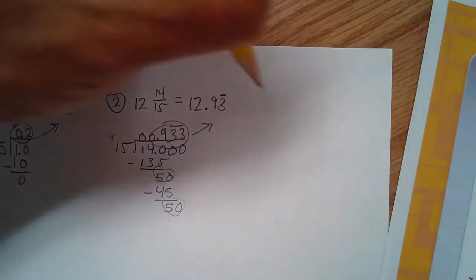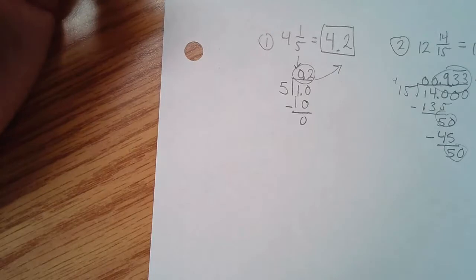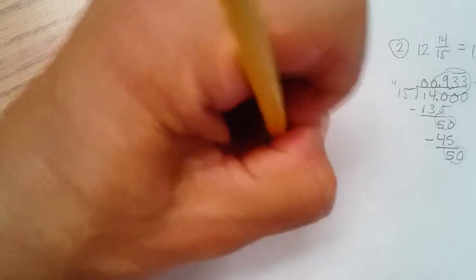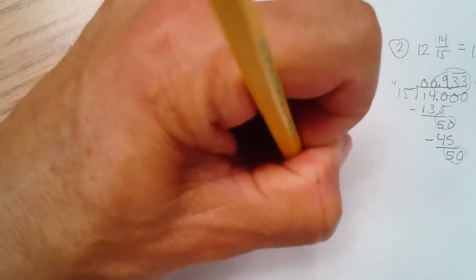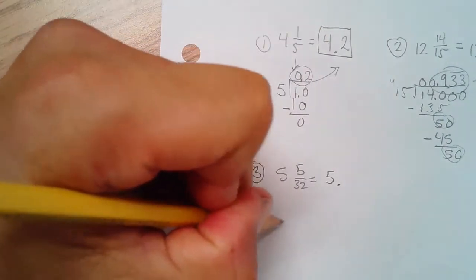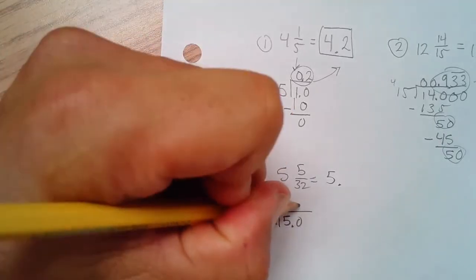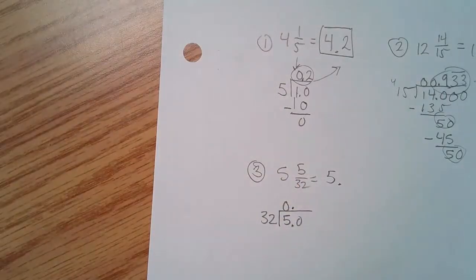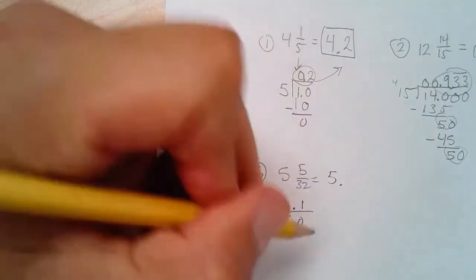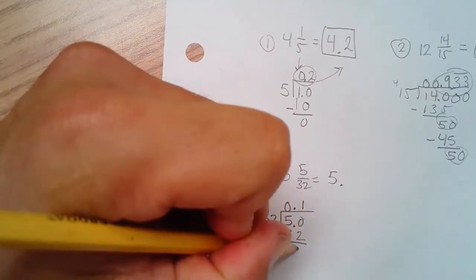Number three, that is 5 and 5 over 32. This is the five decimal point. And then 32 going into five. Well, 32 is not going to go into five. But it will go into 50.